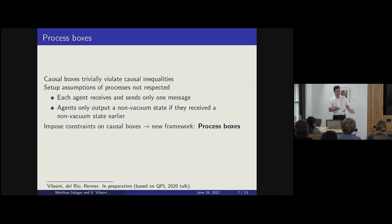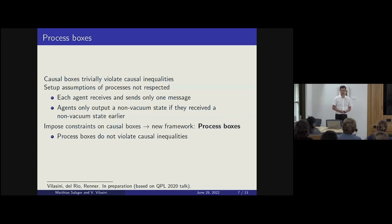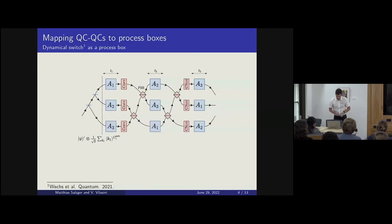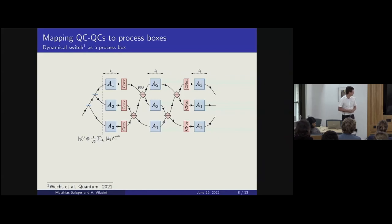Process boxes are what we reconnect the QCQCs to. Process boxes also don't violate causal inequalities, which is already a hint that QCQCs and process boxes might be related. Now let's talk about how we map QCQCs to process boxes. Here is an example of a QCQC, the so-called dynamical switch, also proposed in the same paper. This is a photonic implementation — a proposal for an experiment. You have copy gates, polarizing beam splitters, and CNOT gates that dynamically control the order that the agents apply their operations.